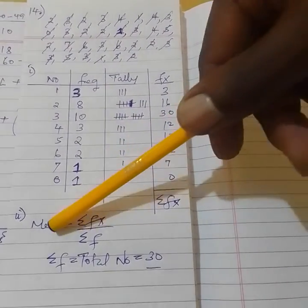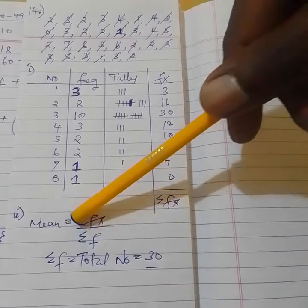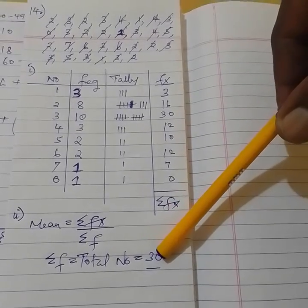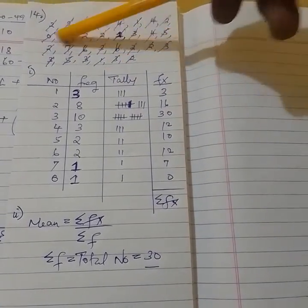Then the next part they wanted you to find the mean. You have the sum of fx over the sum of f, where the sum of f is the total number of items. You count how many items, they are 30.